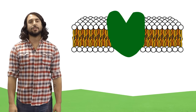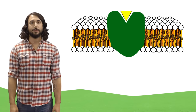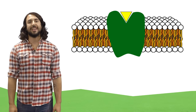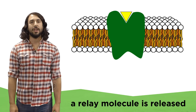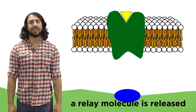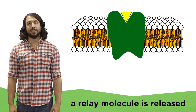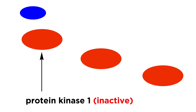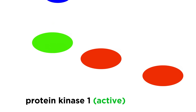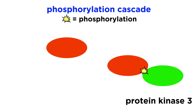Another pathway that can occur is when a signaling molecule binds to a receptor, and the conformational change in the receptor immediately releases a relay molecule on the other side of the membrane. This relay molecule may then interact with various intracellular proteins in a phosphorylation cascade, where certain molecules exchange phosphate groups in a chain reaction.